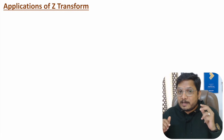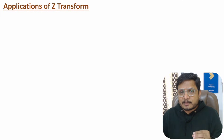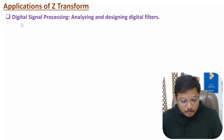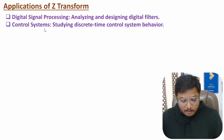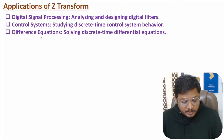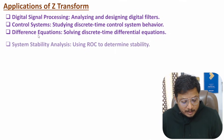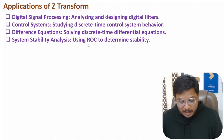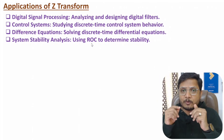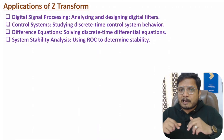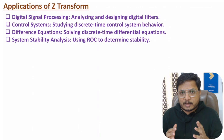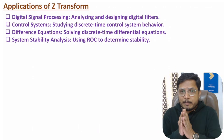Z-transform is widely used with discrete time signals and discrete time systems. Key applications include: digital signal processing, where we analyze and design digital filters; control systems, where we analyze discrete time control system behavior; solving difference equations of discrete time systems; and analyzing stability of a system using the region of convergence (ROC). I hope you enjoyed this session — place any questions in the comment section. Thank you for watching.